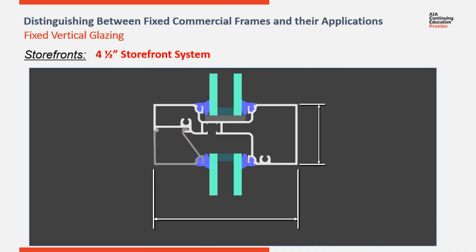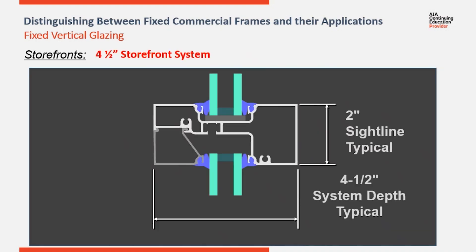This is a section cut of a typical storefront horizontal. To the left is the exterior. The lower portion of the exterior horizontal is a removable glass stop. In this configuration, the system is glazed from the exterior. This can be reversed so that the system is glazed from the interior. The installing glass contractor can decide job by job if it is more economical to glaze from the interior or exterior. Since storefronts are for lower elevations, in many applications they can be reached with a lift from the exterior.